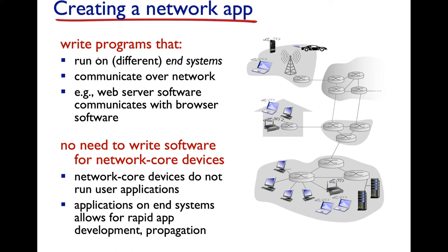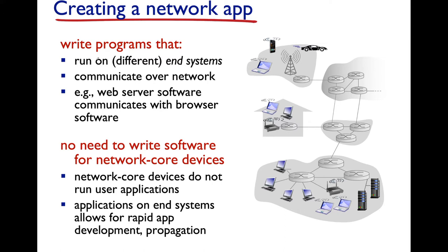Network core devices are deliberately kept very simple and don't run user applications. Because applications only run on end systems or hosts, this facilitates very rapid development. The design keeps complexity at the network edge. On each edge device — our end systems — we have the full five layers: application layer, transport layer, network layer, link layer, and physical layer.